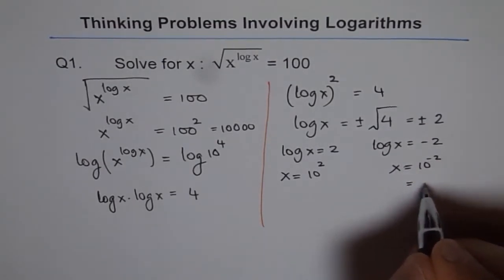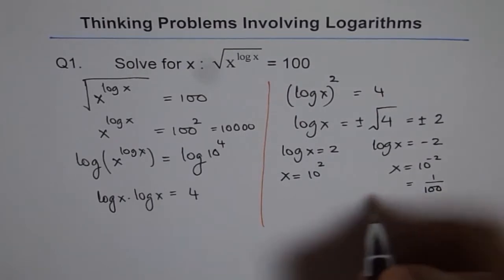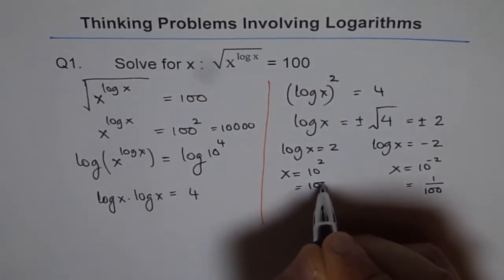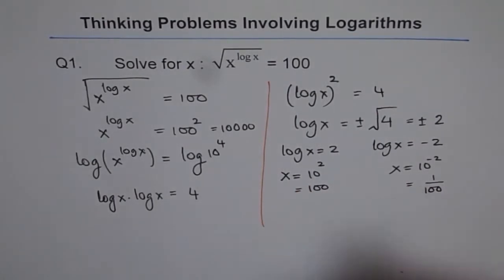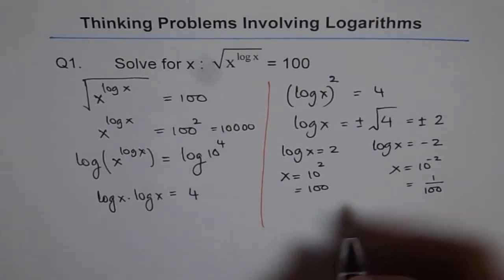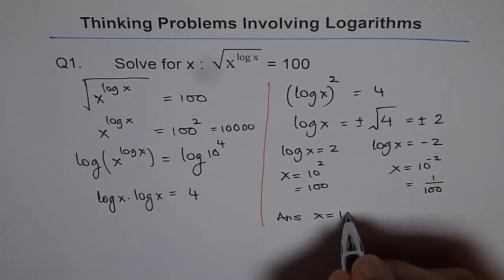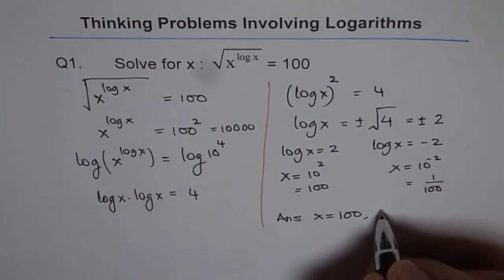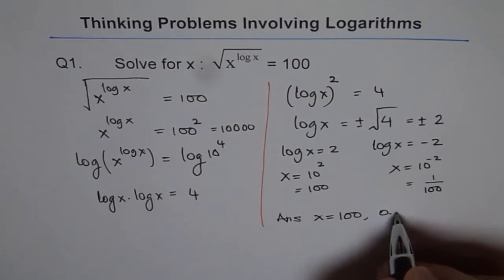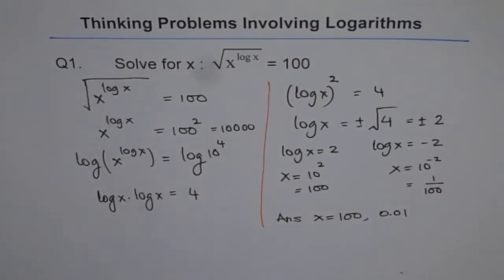10 to the power of minus 2 is 1 over 100. And this is 100. So these are the two possible solutions for us. Therefore we can write down the answer as x equals 100 or 0.01. So these are the solutions.